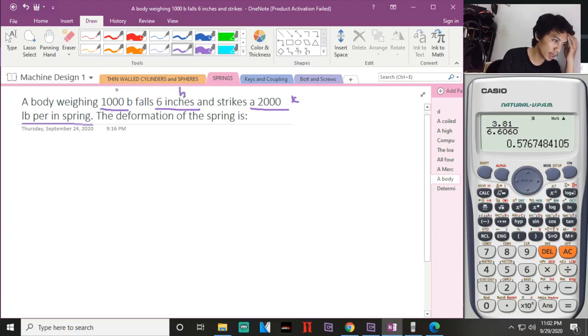The deformation of the spring - the formula is TE equal to KE for the falling body. So TE equals mgh, equal to KE. What is the KE of the spring? That is one half kd squared.